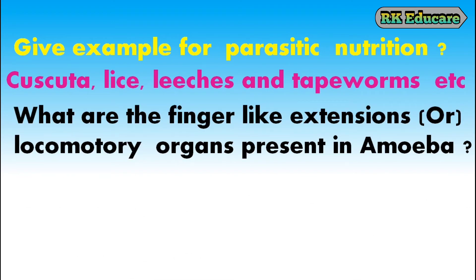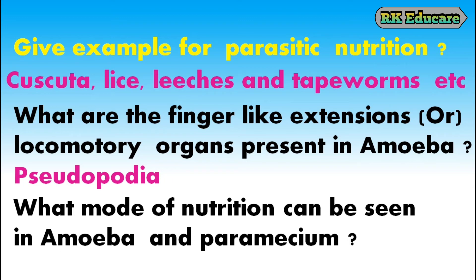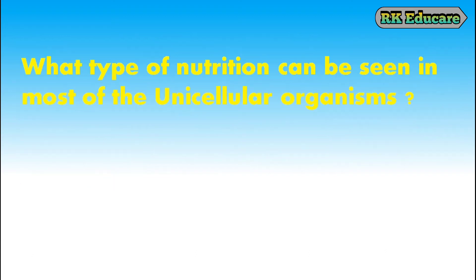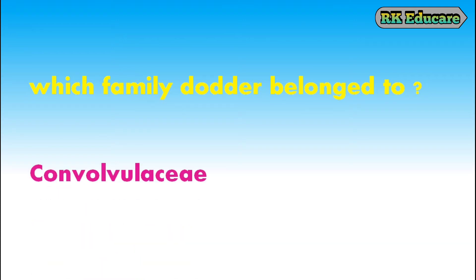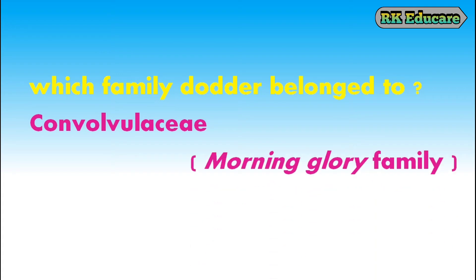What are the finger-like extensions or locomotory organs present in amoeba? Pseudopodia or finger-like extensions are locomotory organs of amoeba. What mode of nutrition can be seen in amoeba and paramecium? Diffusion is a common mode of nutrition in most unicellular organisms like amoeba and paramecium. Give an example for parasitic plants. Dodder or Cuscuta is a good example for parasitic plants. Dodder belongs to the Convolvulaceae or morning glory family.